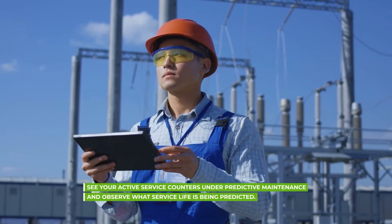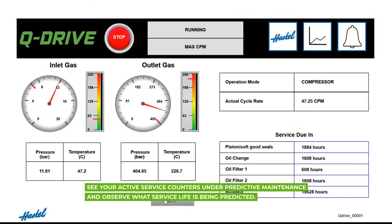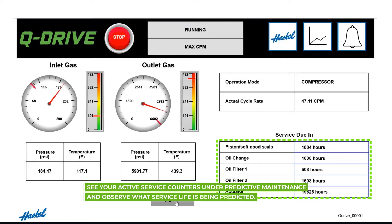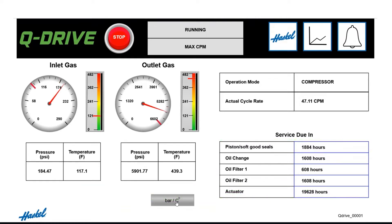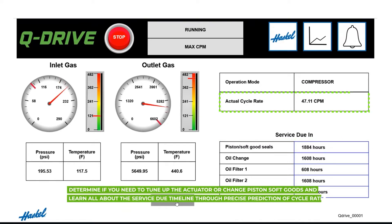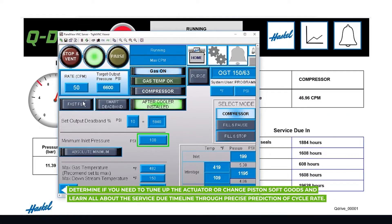See your active service counters under predictive maintenance and observe what service life is being predicted. Determine if you need to tune up the actuator or change piston soft goods, and learn all about the service due timeline through precise prediction of cycle rate.